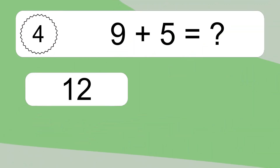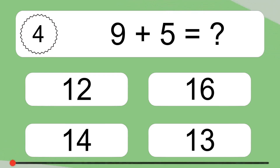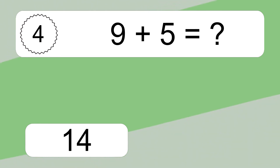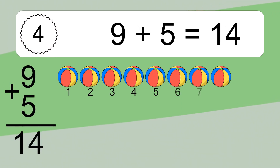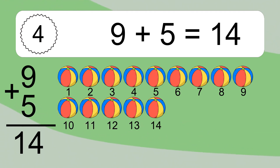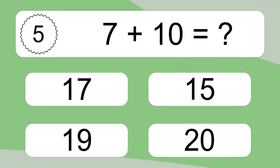9 plus 5 equals what? 9 plus 5 equals 14. Let's count it. 1, 2, 3, 4, 5, 6, 7, 8, 9, 10, 11, 12, 13, 14.